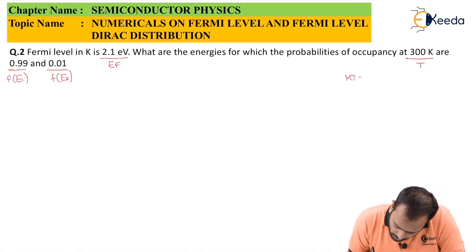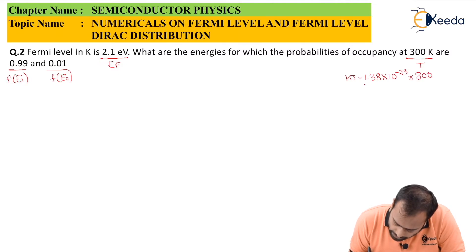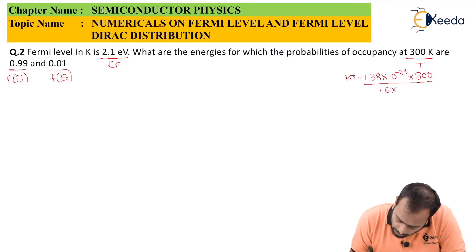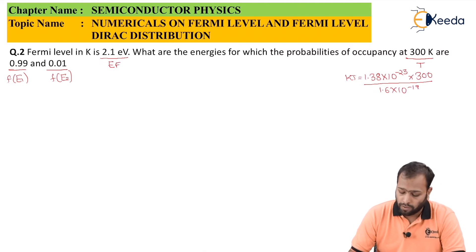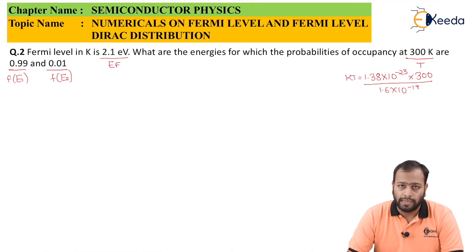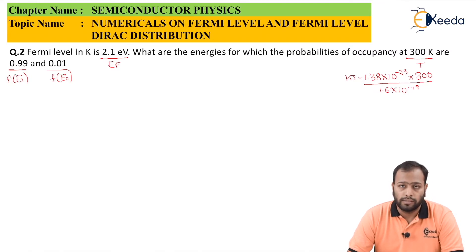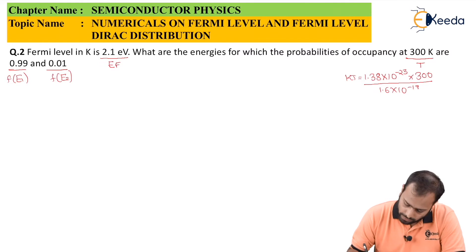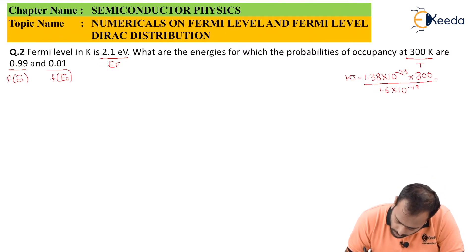KT = (1.38×10⁻²³ × 300) / (1.6×10⁻¹⁹). If you are using a 991E calculator, the constants K and E are directly available on your calculator. Either way, solving this gives KT = 0.026 electron volt.